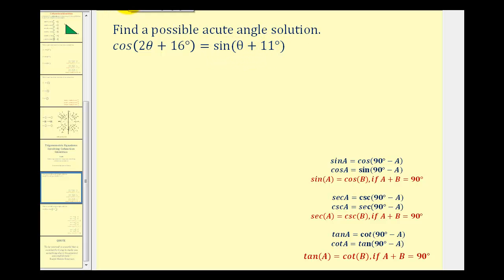As I mentioned in the previous video, most textbooks give the co-function identities in the form given here in blue. But they can also be expressed as sine A equals cosine B if angles A and B are complementary or have a sum of 90 degrees.